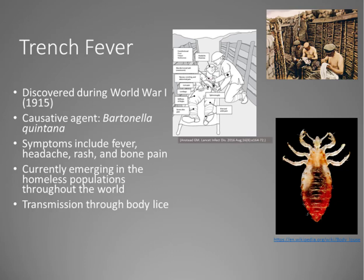The third most common disease associated with Bartonella infection is trench fever, discovered during World War I around 1915. The causative agent is Bartonella quintana. Like Carrion's disease, symptoms include fever, headache, rash, bone pain, and a variety of other symptoms. This is currently emerging in homeless populations throughout the world. Transmission of Bartonella quintana is often through body lice, as shown here with soldiers picking through their shirts to remove lice.